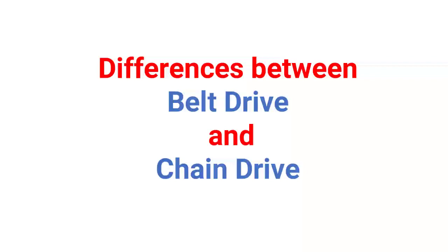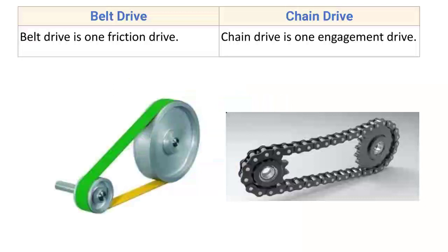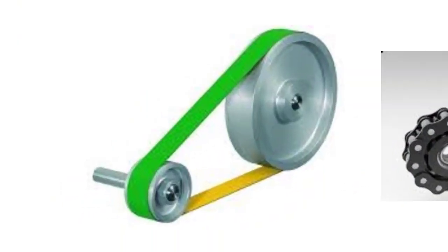In this video we will discuss the differences between belt drive and chain drive. The first difference is that belt drive is a friction drive. It is a flexible friction drive in which motion is transmitted from the driver shaft to the driven shaft due to the friction between the belt and the pulley — specifically between the inner surface of the belt and the pulley.